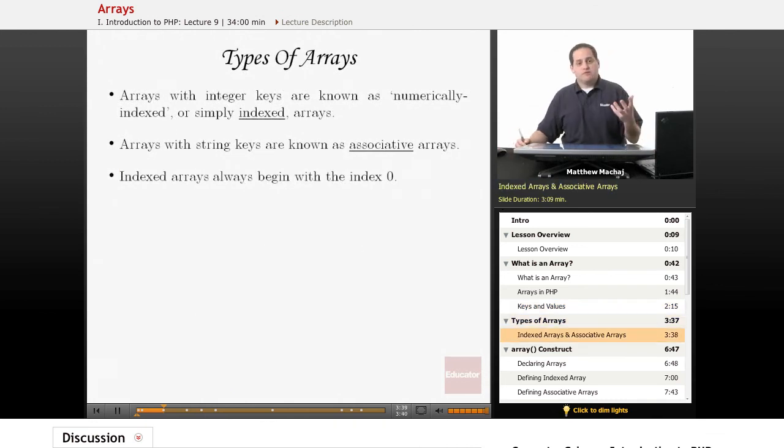So arrays with integer keys, as we just showed, are known as numerically indexed or just simply indexed arrays. And arrays with string keys are known as associative arrays. So we have associative arrays and indexed arrays.